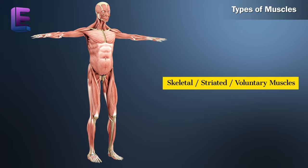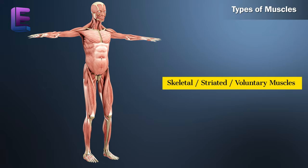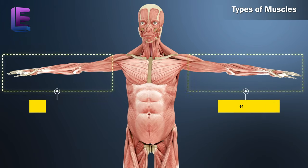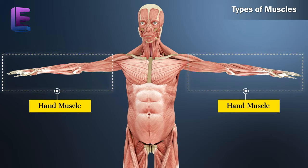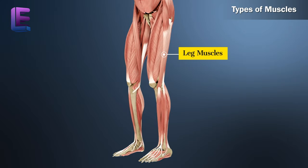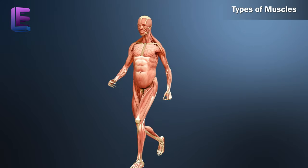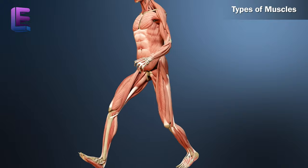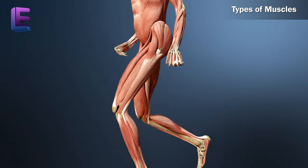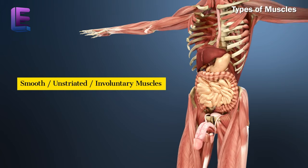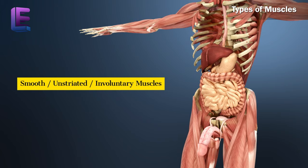Skeletal or striated or voluntary muscles are voluntary muscles present in the hands and legs. They are attached to the bone and help in movement.